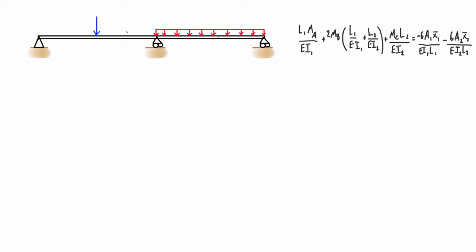Basically what it does is compare three moments across two spans of a beam. If this is span one and this is span two, we're going to have three points: point A on the left of span one, point B on the right of span one and the left of span two, and point C on the far right of span two.